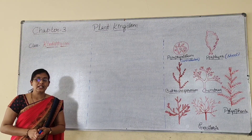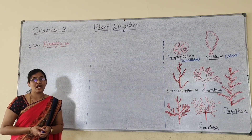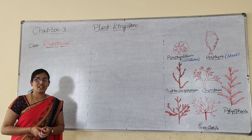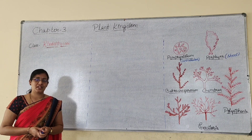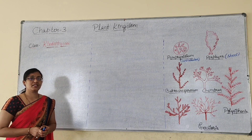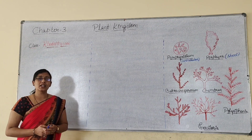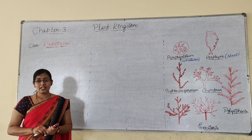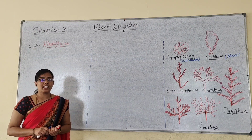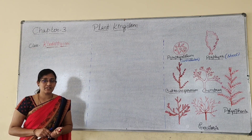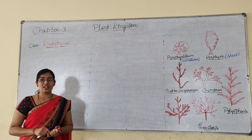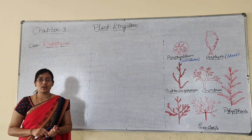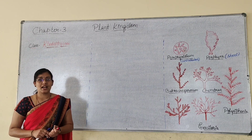Welcome back to the students. In the last class we discussed about chlorophyceae and phaeophyceae. Chlorophyceae is nothing but green algae, phaeophyceae is nothing but brown algae. There is one more algae — that is rhodophyceae. Rhodophyceae is commonly called as red algae.